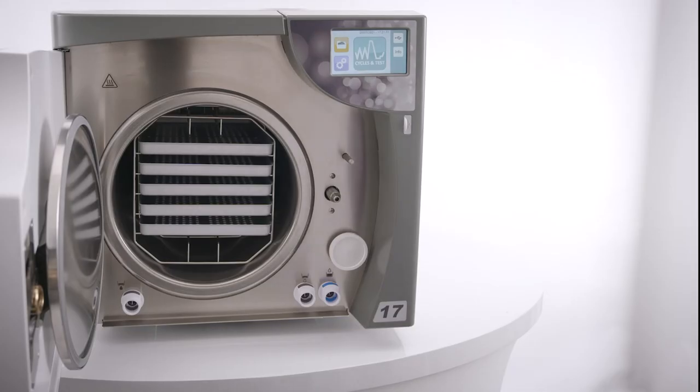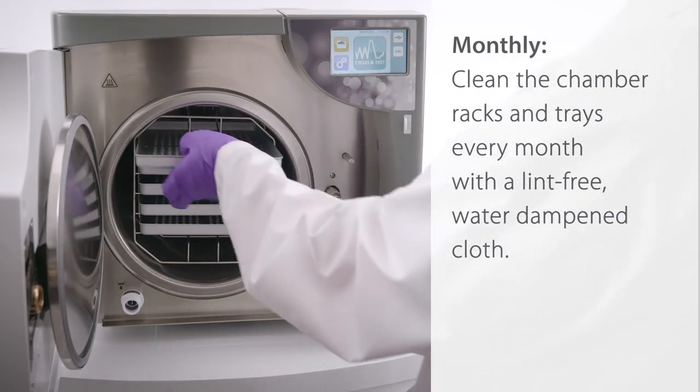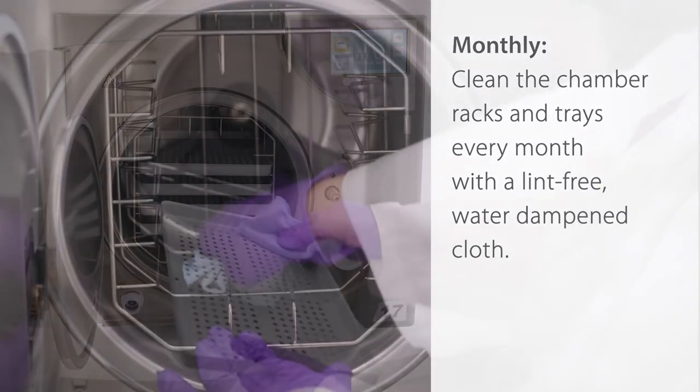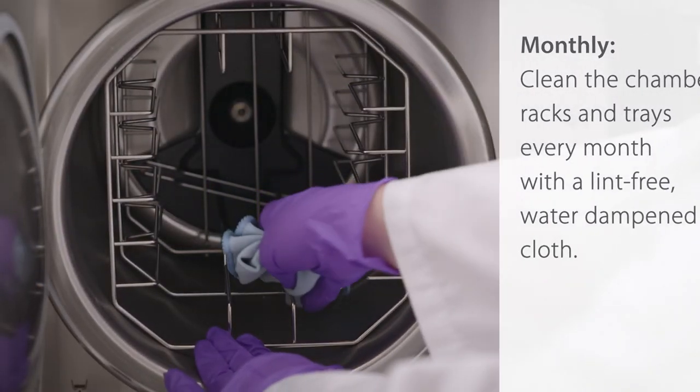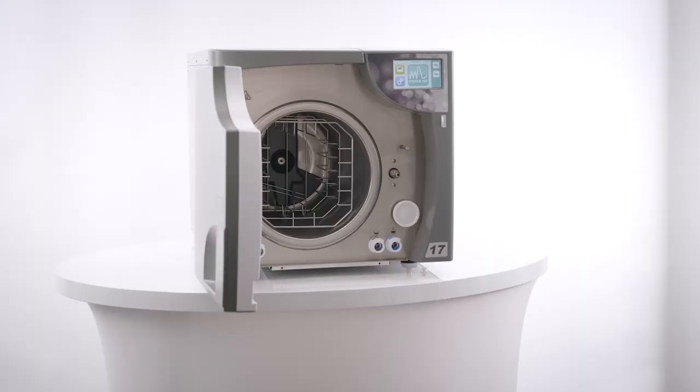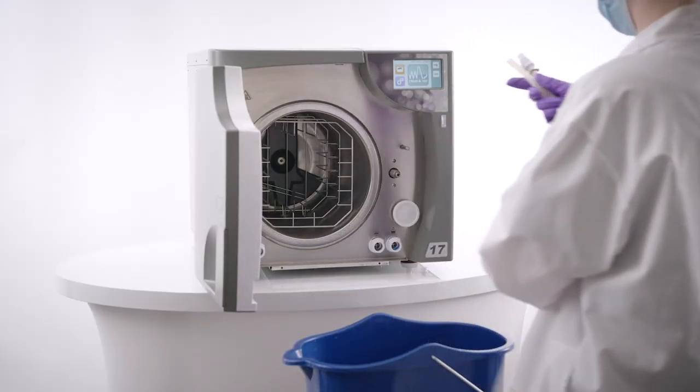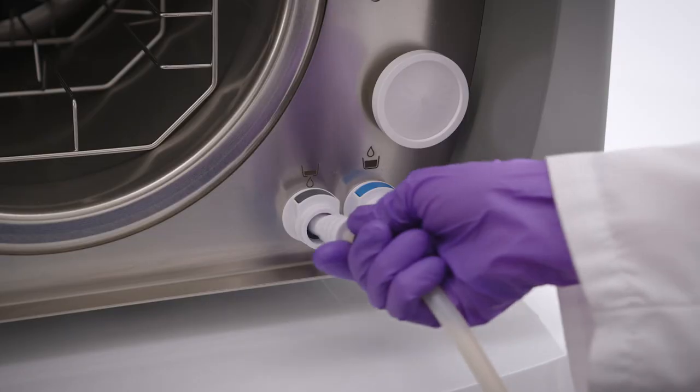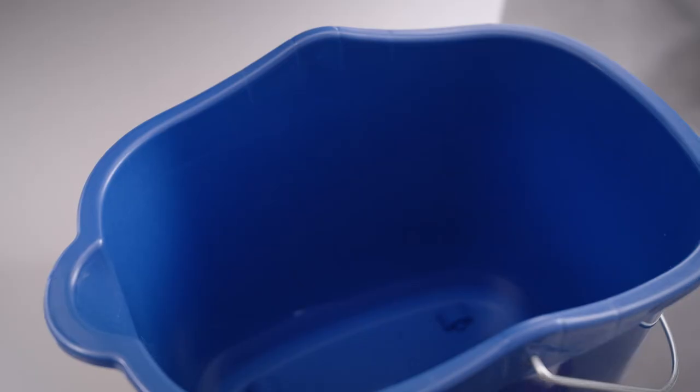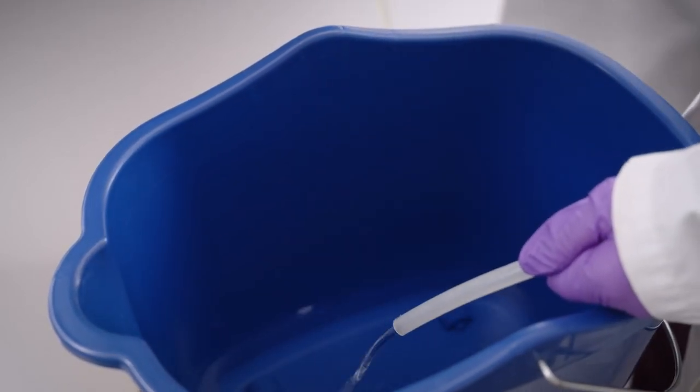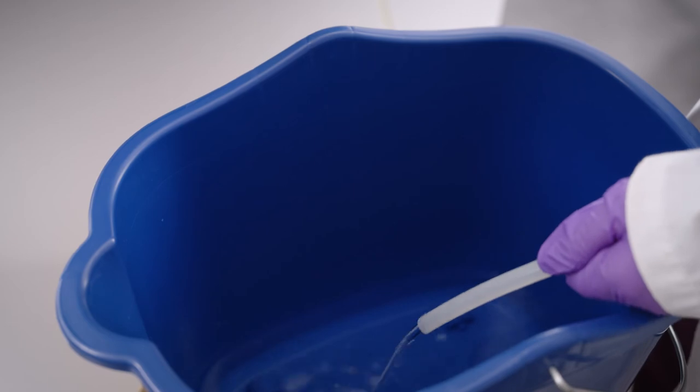Monthly, clean the chamber racks and trays every month with a lint-free water dampened cloth. As well, drain and clean the internal water reservoir as per the instructions outlined in the operator's manual. If you have an external water storage tank used for automatic filling, it is also important to clean the tank following the manufacturer's instructions.